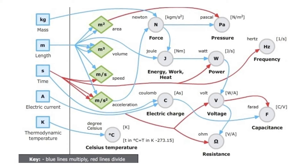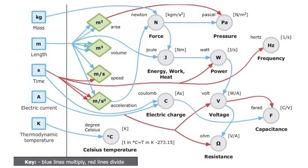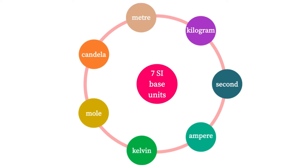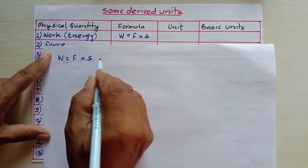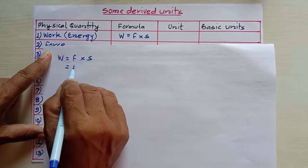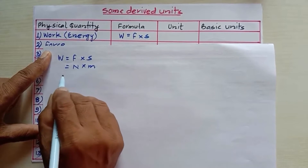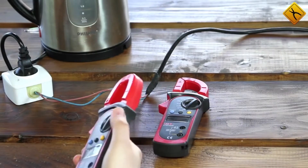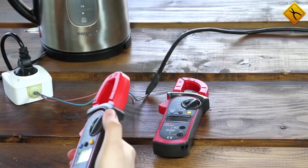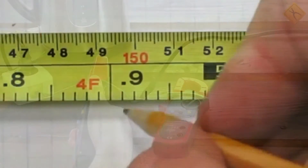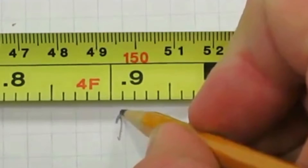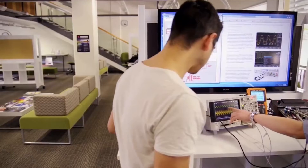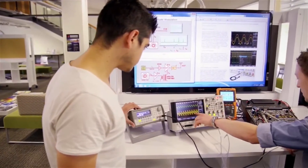The SI Units is made up of seven base units which are used for defining 22 derived units. The SI base units are the standard units of measurement defined by the International System of Units for the seven base quantities of what is now known as the International System of Quantities. They are notably a basic set from which all other SI units can be derived. The SI base units are a fundamental part of modern metrology and thus part of the foundation of science and technology. The SI base units form a set of mutually independent dimensions as required by dimensional analysis commonly employed in science, engineering, and technology.